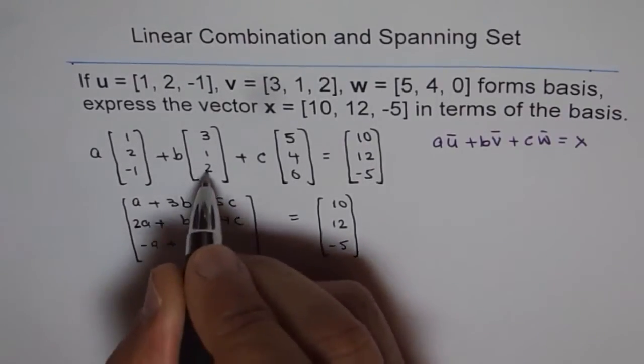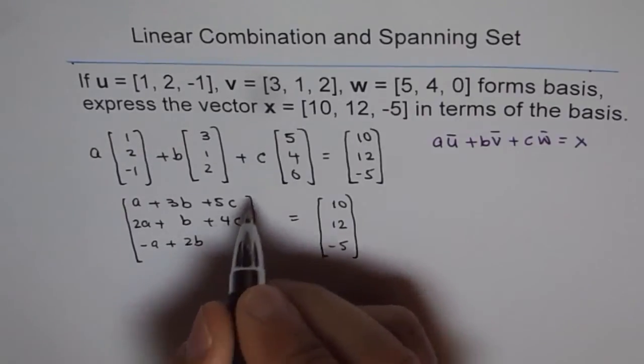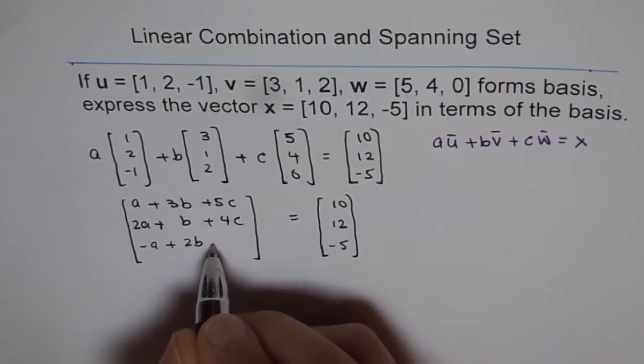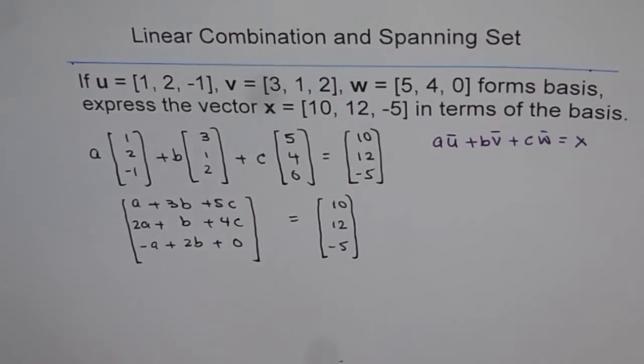and then we have minus a, plus 2 times b, plus c times 0, which is 0,